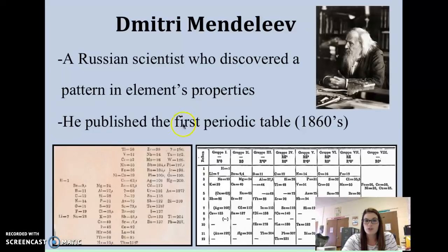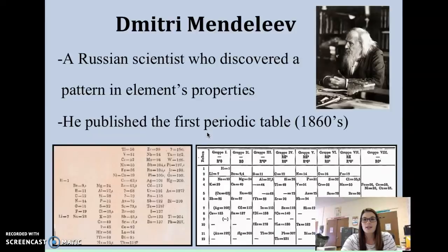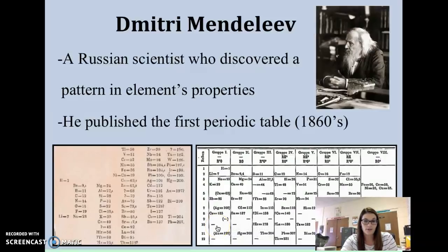This is kind of the first version of the Periodic Table that Mendeleev published. It looks a lot different today, but it's actually set up very similarly — it just looks different. He studied all of these elements and realized that they had specific properties, which we'll be talking about here shortly, and so you could put them in a certain order based on each element's properties.